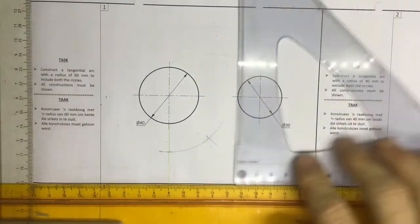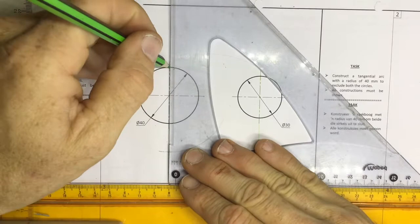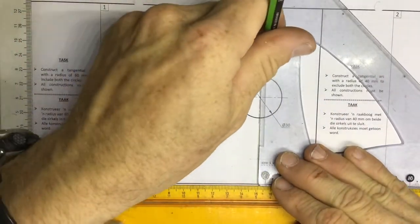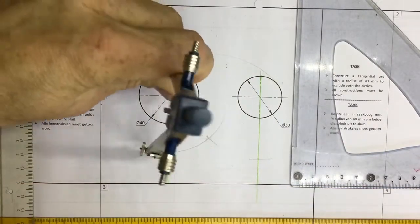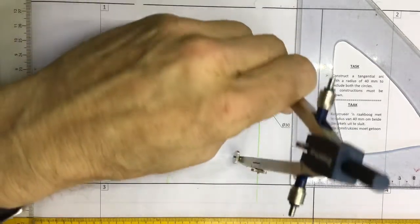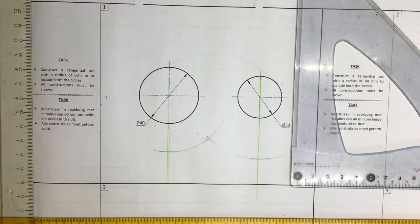You're going to draw a nice construction line extending this out, so construction line coming down here and a construction line coming down here. You're going to take that 60 millimeter radius and you're going to make an arc onto that construction line, and take that radius and make an arc onto that construction line going down there.